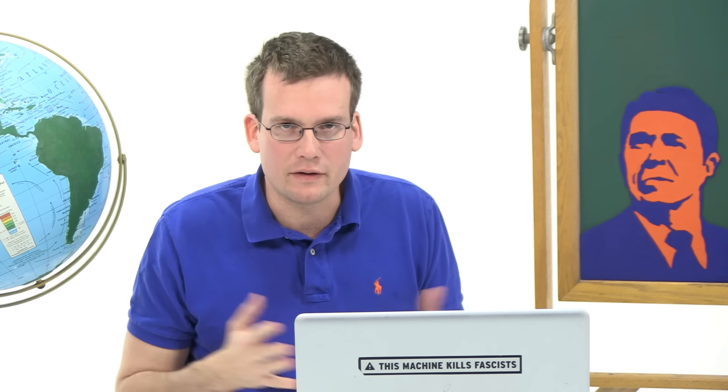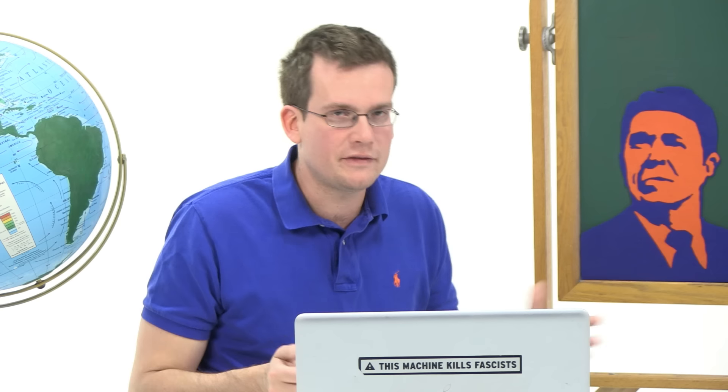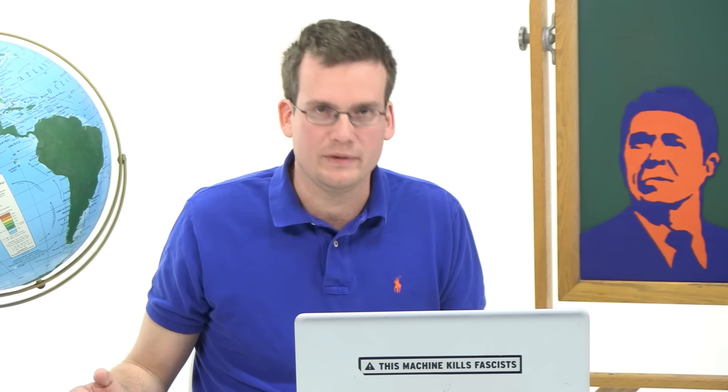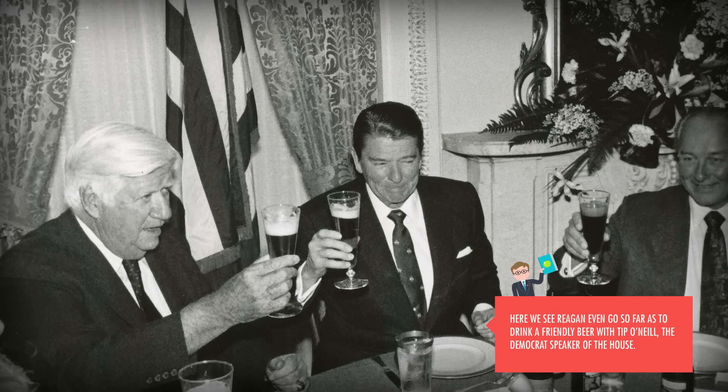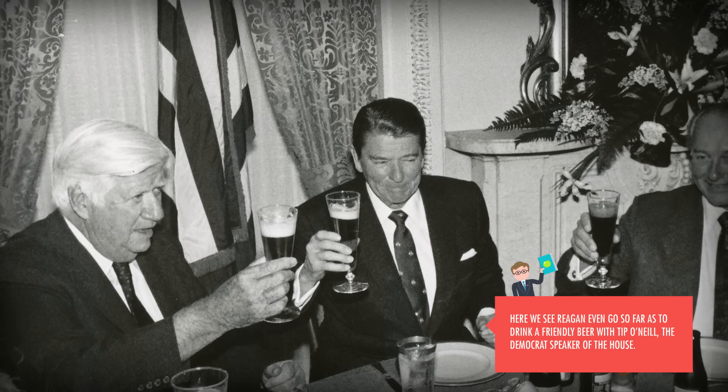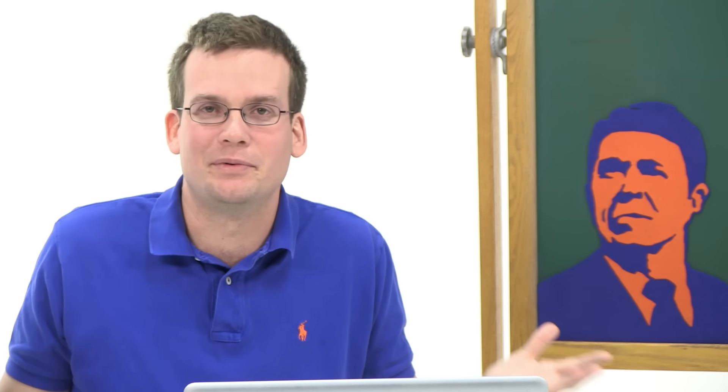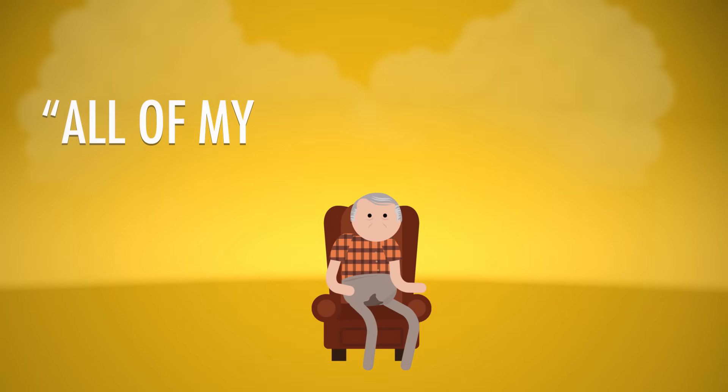Now, of course, Reagan is considered the darling of conservatives today, but by current standards, he was something of a moderate. I mean, yes, he cut taxes, and he cut funding for programs that helped the poor, like food stamps and school lunches. But during his second term, he worked effectively with the Democratic Congress. There's no bipartisanship today. Also, he left the big New Deal and Great Society programs largely intact. I mean, he was too old to believe in cutting Medicare. He was like, all of my friends are on this.